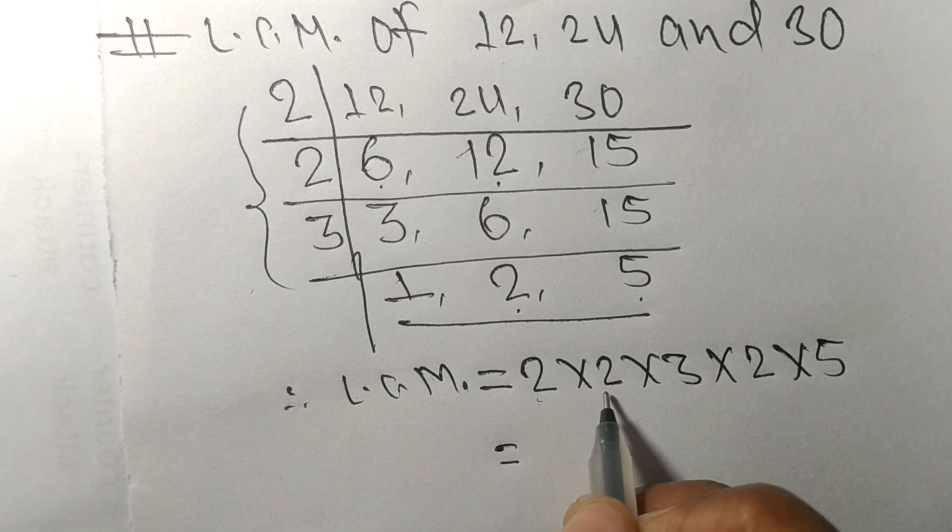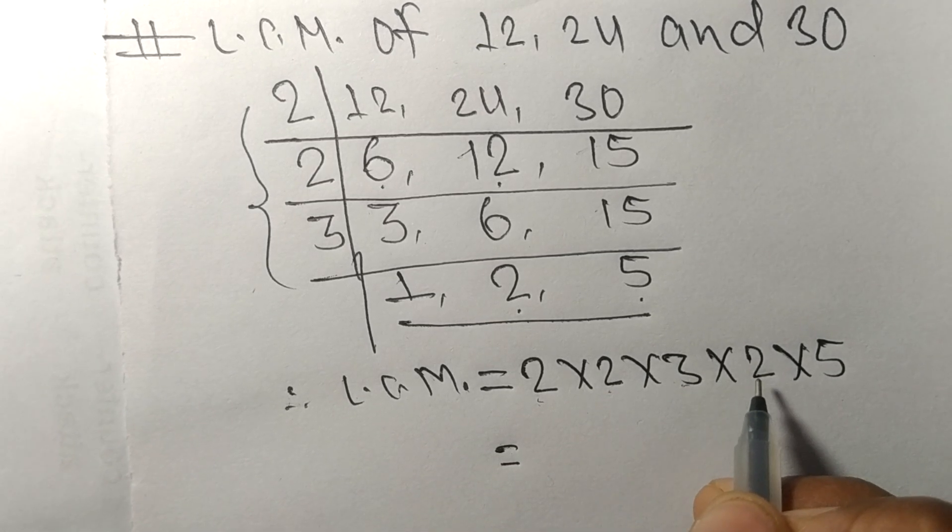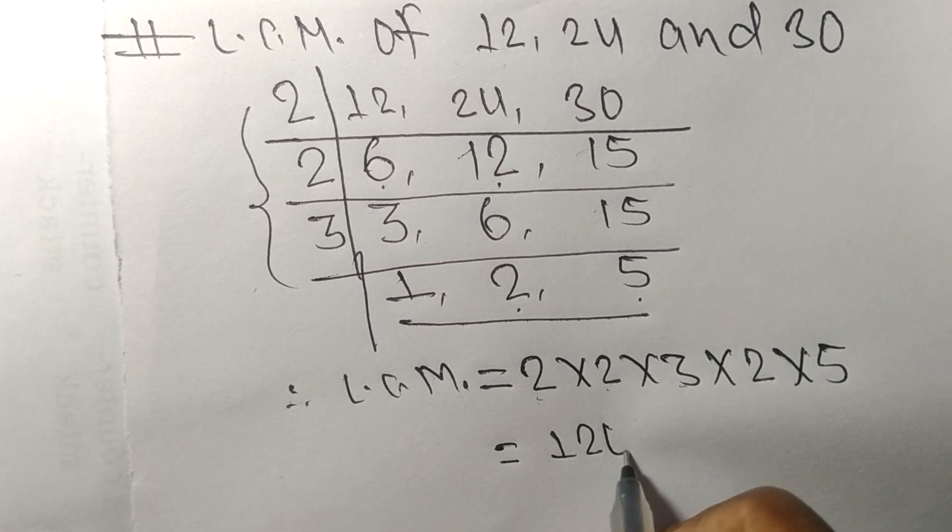2 times 2 means 4, 4 times 3 means 12, 12 times 2 means 24, 24 times 5 means 120.